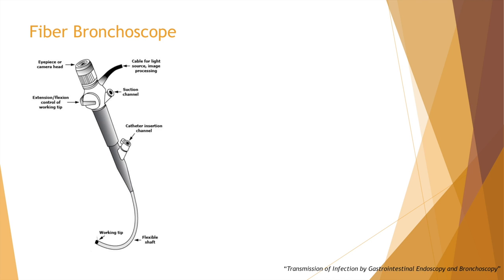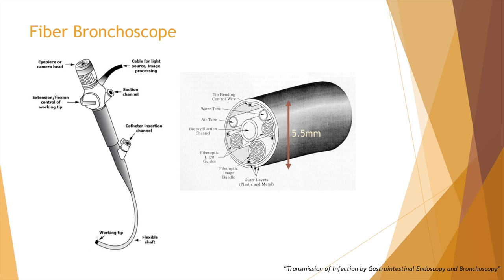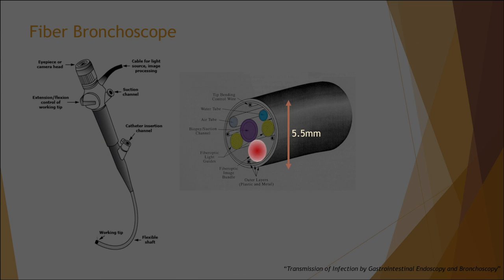A fiber bronchoscope has primarily two parts: the eyepiece where doctors can look into, and the objective that goes inside the patient's airway. The distal end has an illumination channel and the main imaging channel. For more advanced bronchoscopes, there are respectively channels for water, air, a channel to perform biopsy, illumination, and lastly the imaging channel that is connected using optical fibers. This is the part we will be focusing on for the rest of the video.